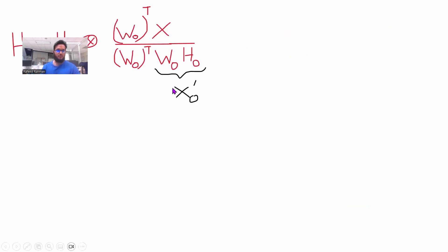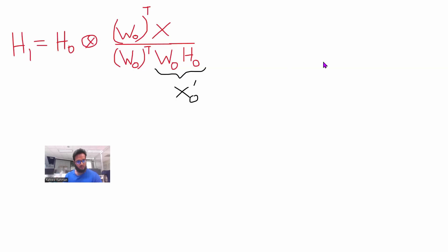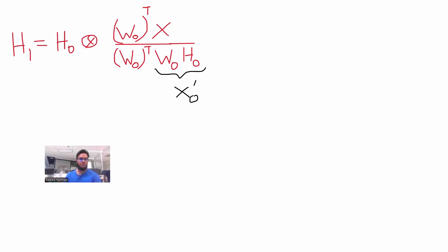This is the formula to update the H matrix, and there is a similar formula for W. H0 is the initial H matrix. We do an element-wise matrix multiplication, meaning the dimension of the whole update is the same as H0. In the numerator we do a matrix multiplication, and in the denominator we do another matrix multiplication. Then we do an element-wise division — each element of the numerator matrix is divided by the corresponding element of the denominator matrix.